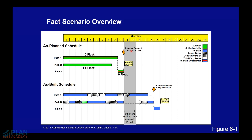This is our as-planned schedule. The area in gray represents bad weather — winter weather. Activities in path A are able to work on winter-related months, but activities in path B and the finished activity are not able to work during the winter time.